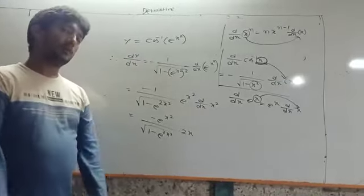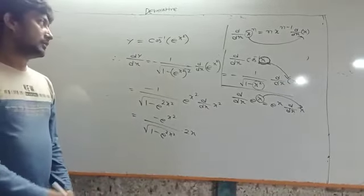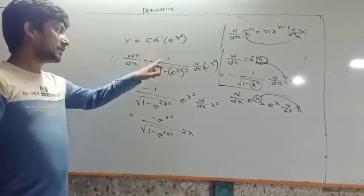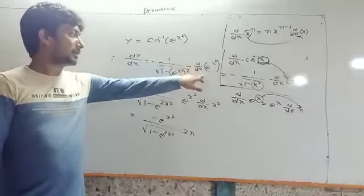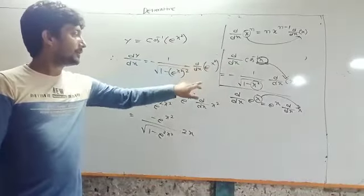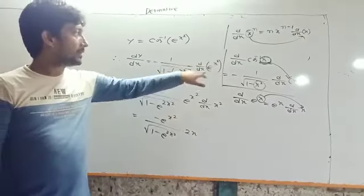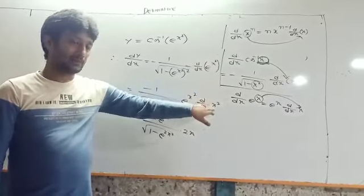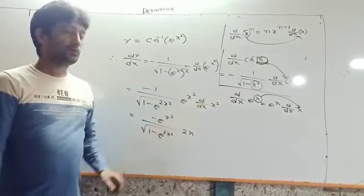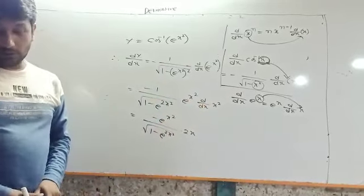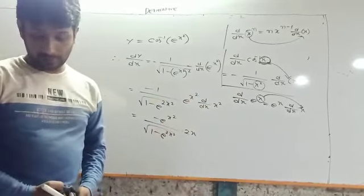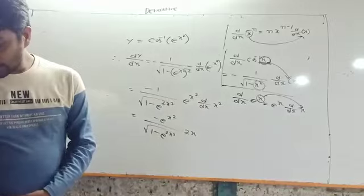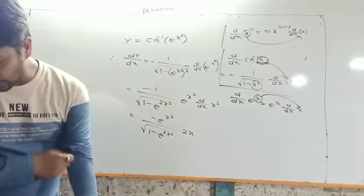If we choose e to the power x square by root over 1, then we transform the root over 2x, so the root will change. That is very important. Take the next one.